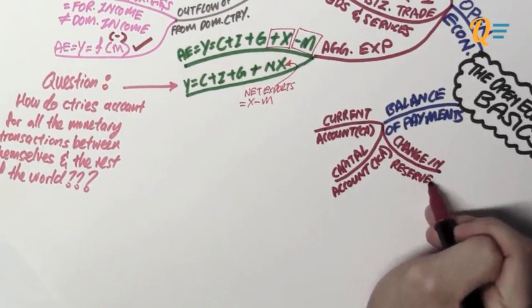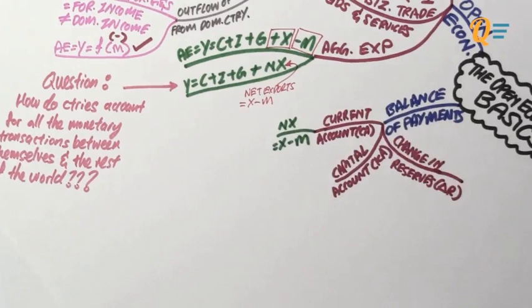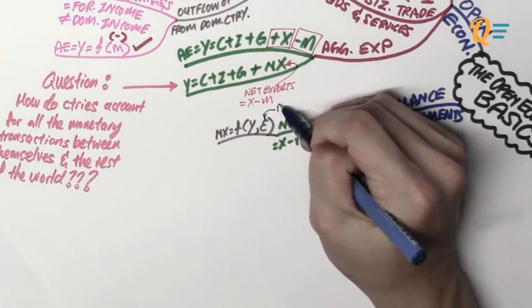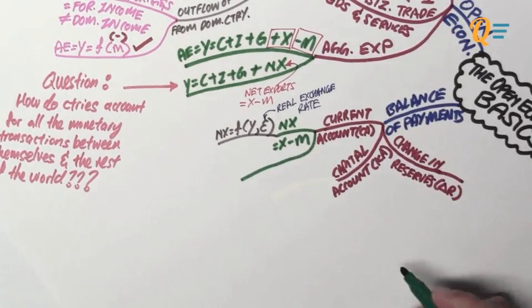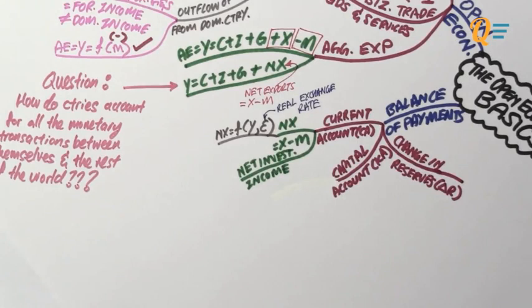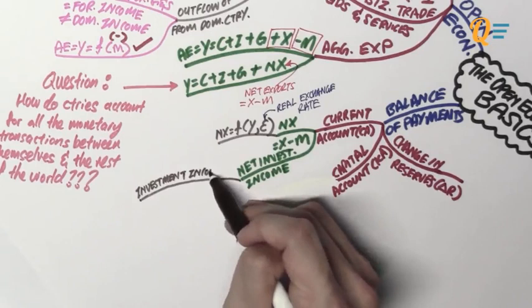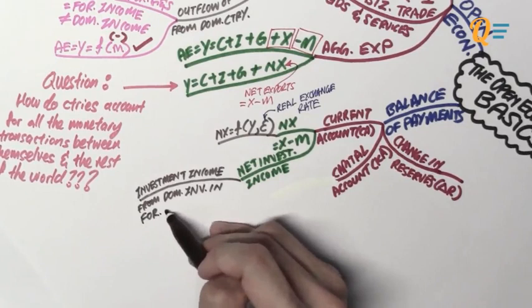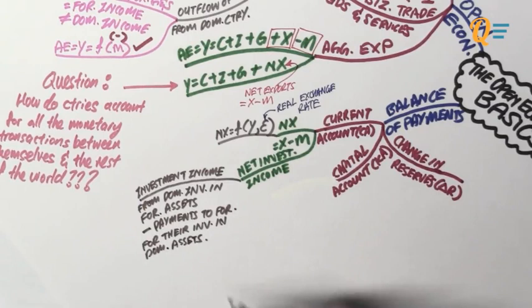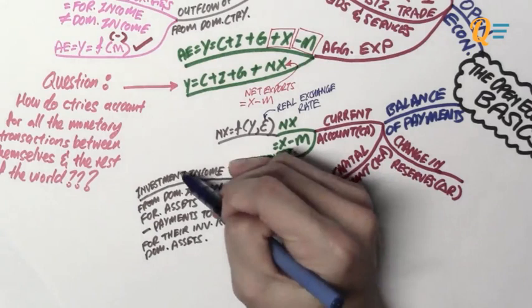Your current account is actually made up of three major components. The first component is net exports, which is your exports minus your imports. Your net exports is actually a function of the domestic income as well as epsilon. Now epsilon here refers to the real interest rate, which is something we'll be talking about later. Now the second thing that makes up the current account is your net investment income. Whenever we say net, it is always a net between an outflow and an inflow. In the case of net investment income, it is basically taking the investment income from a domestic investment in some kind of foreign asset and subtracting the payments to foreigners for their investment in some kind of domestic asset — so it's your income minus your payment, an inflow minus an outflow.